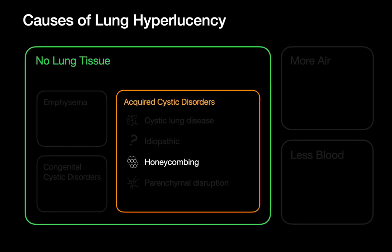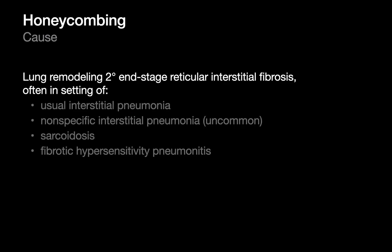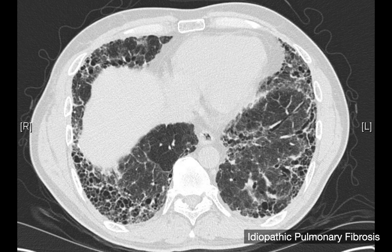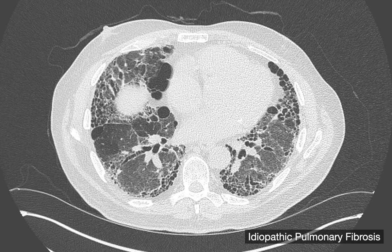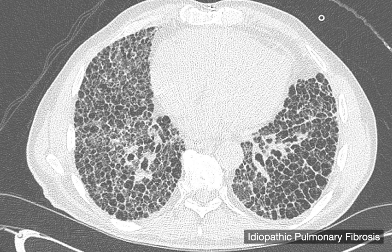The third type of acquired cystic disorder is honeycombing, which represents lung remodeling in people with end-stage reticular interstitial fibrosis. The differential diagnosis for honeycombing is the differential for reticular interstitial opacity or fibrosis, since honeycombing is its end stage. Think of UIP (such as IPF), rare cases of NSIP that progress to honeycombing, sarcoidosis, and fibrotic HP. Examples show the black spaces stacked upon each other in a background of pronounced reticular interstitial opacity.